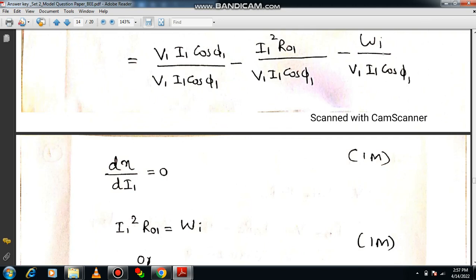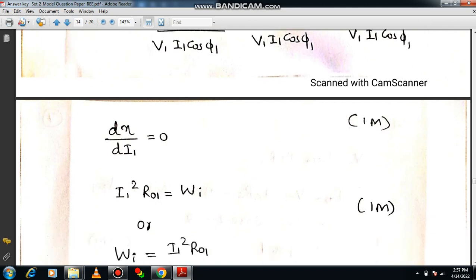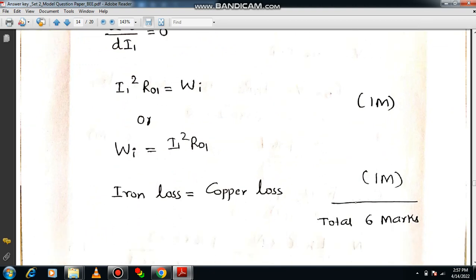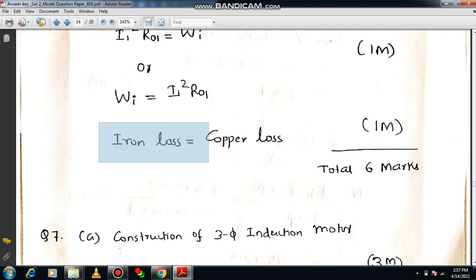Now you can apply the principle of maxima or minima. According to principle of maxima or minima, identify the variable. Variable is I1 only, because I1 current is actually getting varied. So D eta by D I1 is equal to 0, where eta is the efficiency. So if I do the differentiation, you will be getting I1 square R01 is equal to WI, or WI is equal to I1 square R01. What does it mean? I1 square R01 is nothing but copper loss. What is WI? WI means iron loss. So ultimately iron loss will be equal to copper loss. This is your condition for maximum efficiency.